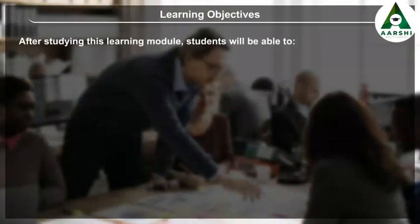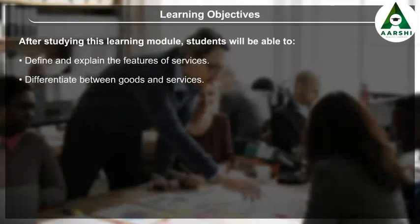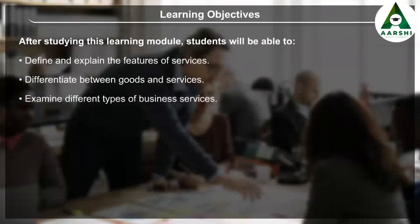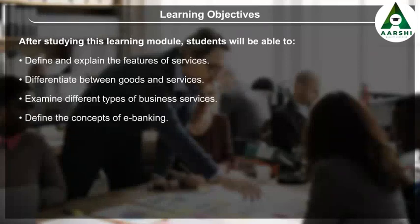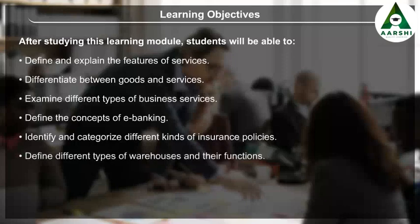Learning Objectives: After studying this learning module, students will be able to define and explain the features of services, differentiate between goods and services, examine different types of business services, define the concepts of e-banking, identify and categorize different kinds of insurance policies, and define different types of warehouses and their functions.